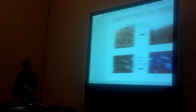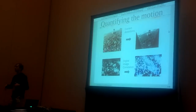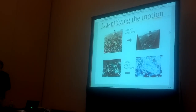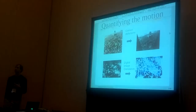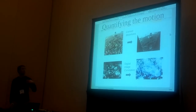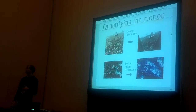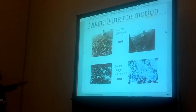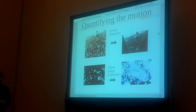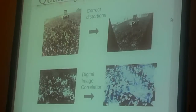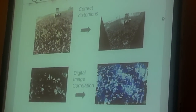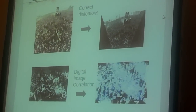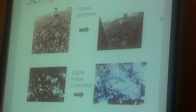So how do we do this? We want to quantify the motion. We took videos from YouTube, we corrected for distortions, and then we used digital image correlations to backtrack the movement of people in the crowd. On the right here you see an animation of one of the velocity fields that you typically see. It's very disordered and chaotic, and there's no real overall order to it, so what we want to do is look at the statistics.